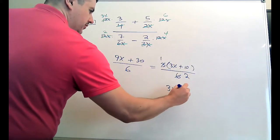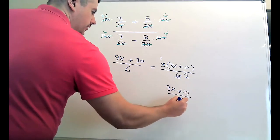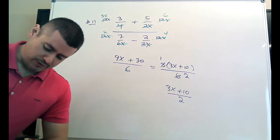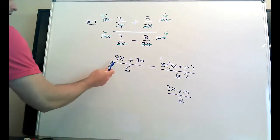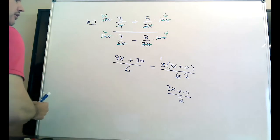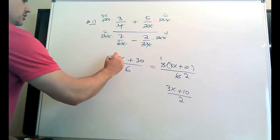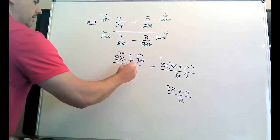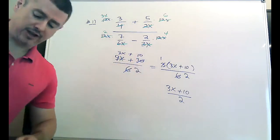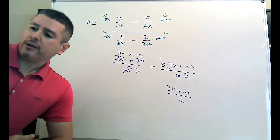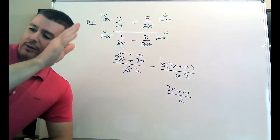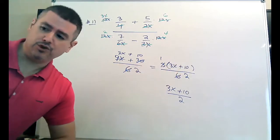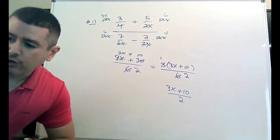This is multiplication, so you can divide three into six. Three divided by three is one, six divided by three is two. So you get three X plus 10 over two. You could also just say nine, 30, and six are all divisible by three and just divide them all by three — you get the same thing. They're all multiples of three, but you're supposed to do it by factoring. So that's the first one.